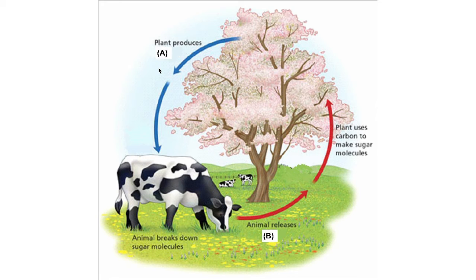Here comes the interdependence of plants and animals. Plants produce oxygen and food for the animal world. Animals take in the food made by plants as well as breathe in the oxygen released during photosynthesis, while animals release carbon dioxide during respiration, which is used by plants to make their food — the sugar molecules.